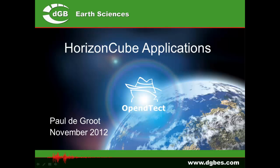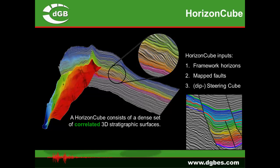In this presentation we're going to look at a number of HorizonCube applications. First, let's look at what a HorizonCube is. Basically this is a dense set of auto-tracked correlated 3D stratigraphic surfaces. The way we auto-track the seismic data is by tracking the dip field. We first calculate from the seismic a dip steering cube, giving us at every position the local dip estimate of the seismic data. This is the main input to our tracker — we are not tracking amplitude or phase, we are tracking dip.